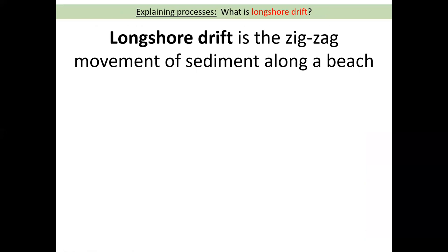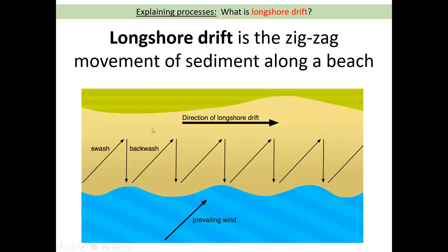So what is longshore drift? Longshore drift is the zigzag movement of sediment along a beach. Here we've got a beach, behind it is the land, and at the bottom we've got the sea. Another very important key term is the prevailing wind — the direction the wind normally blows from. In the UK, on most days, the wind generally blows from the southwest, so it blows from this direction.